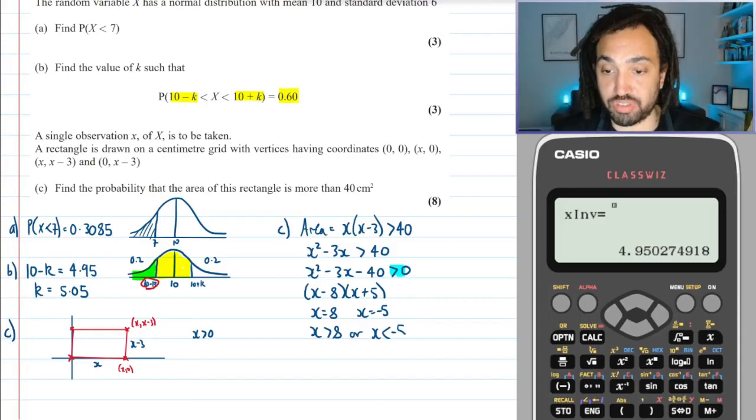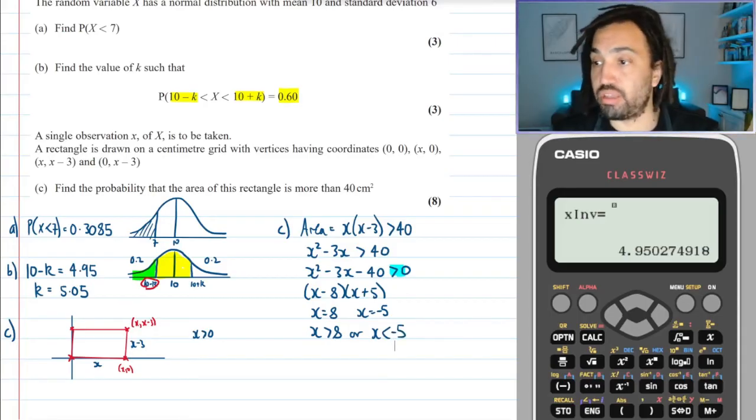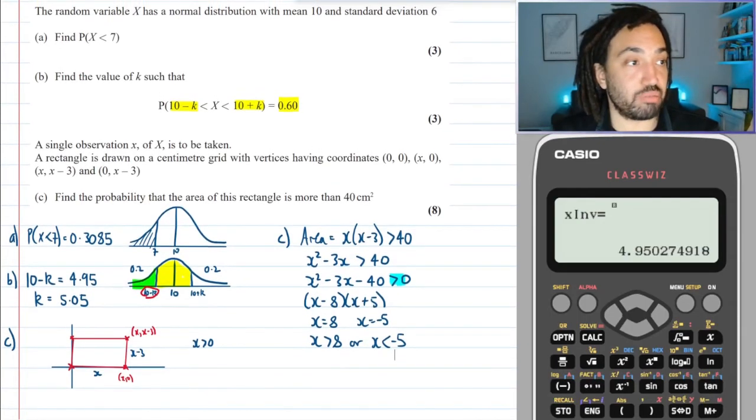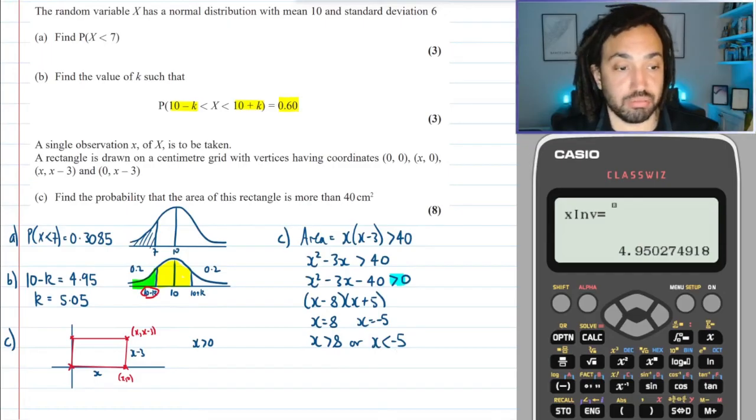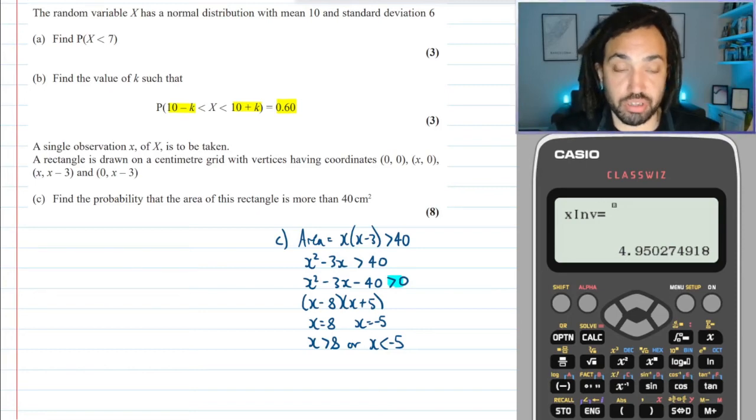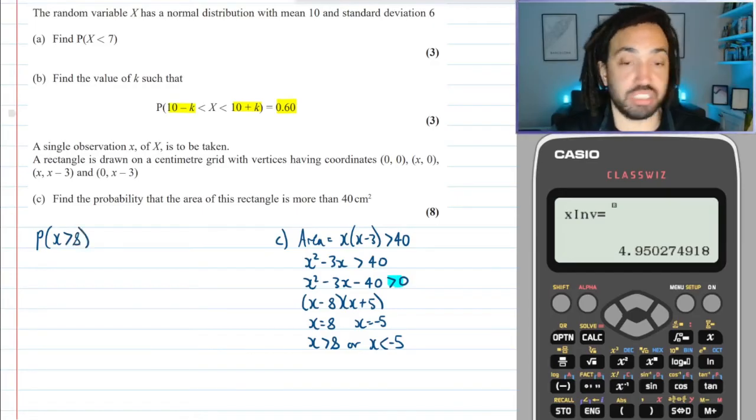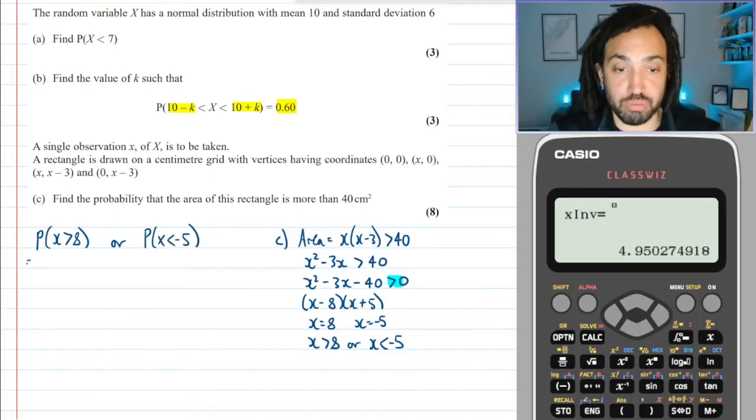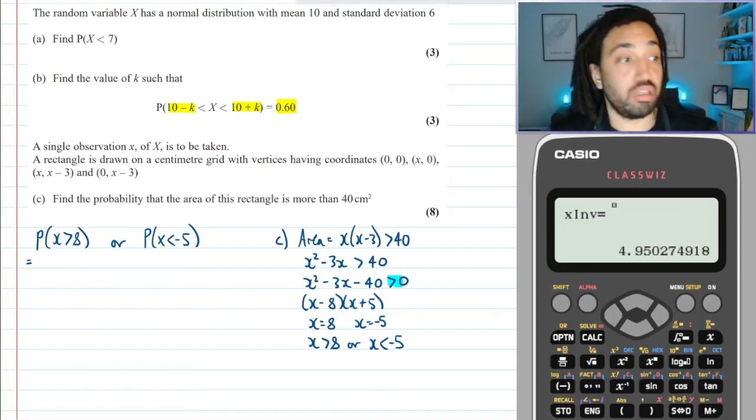So those are my two solutions. I'll just get rid of this like that and I will say that x needs to be either greater than 8 or x needs to be less than -5. Okay, right, let me clear some space. So a single observation is taken of x, and we've just shown that we get this condition satisfied if x > 8 or if x < -5. So we need to find two probabilities.